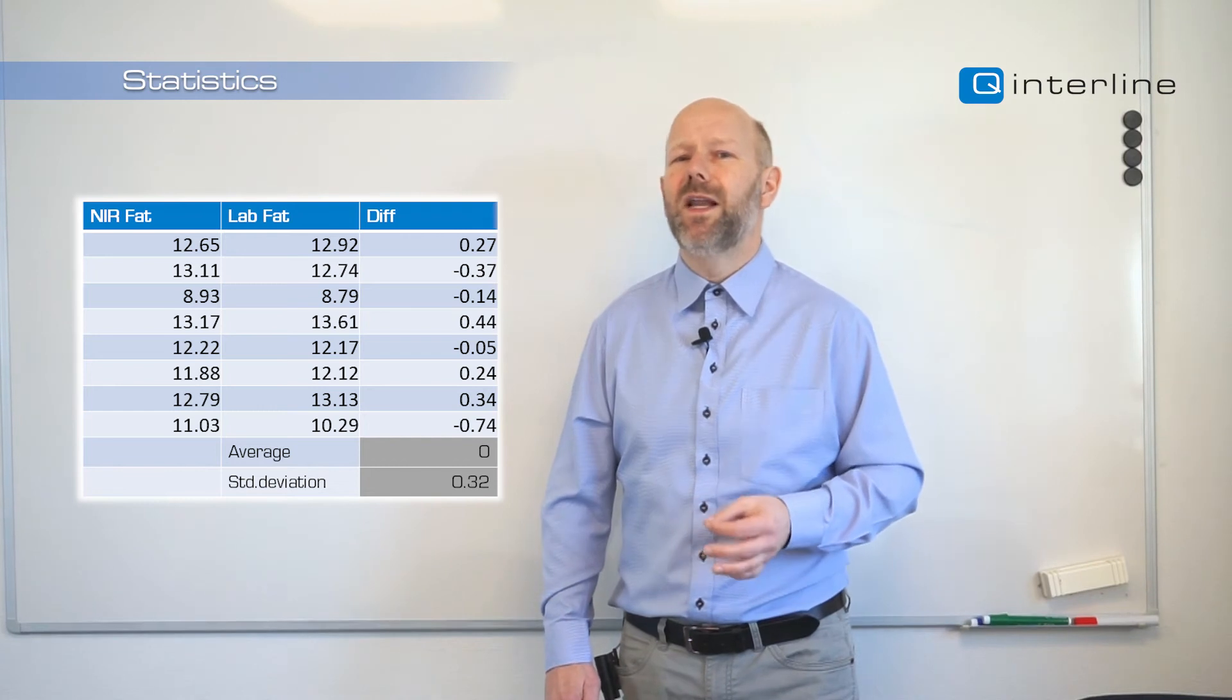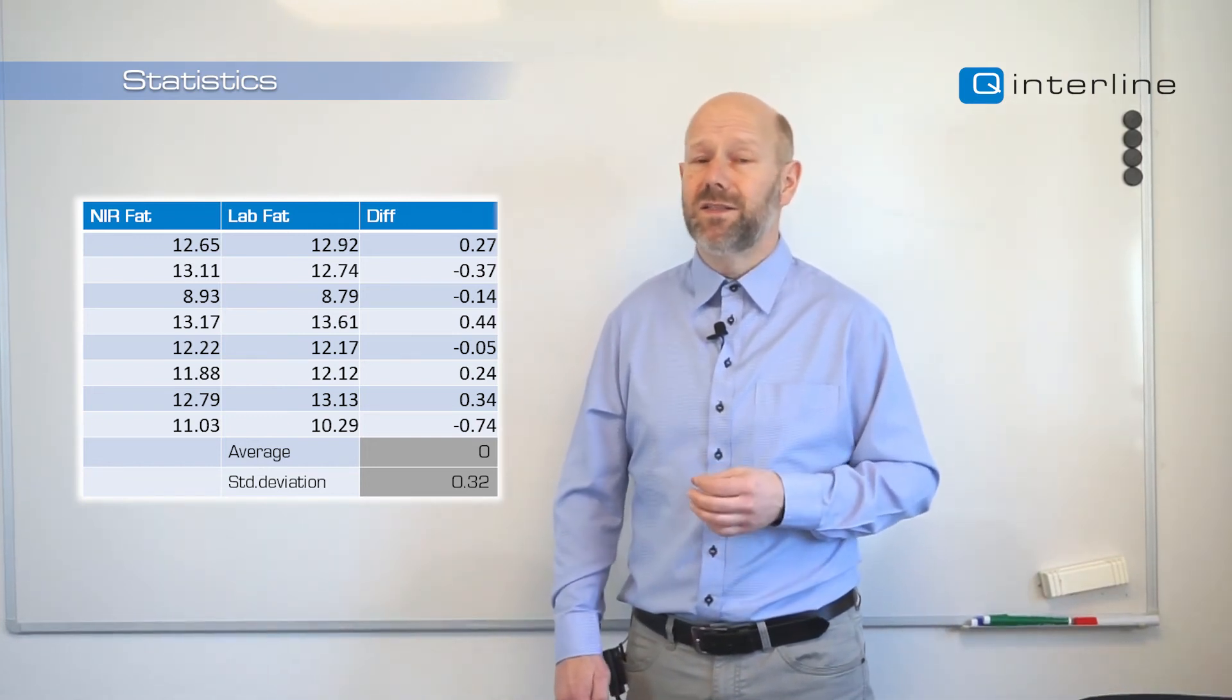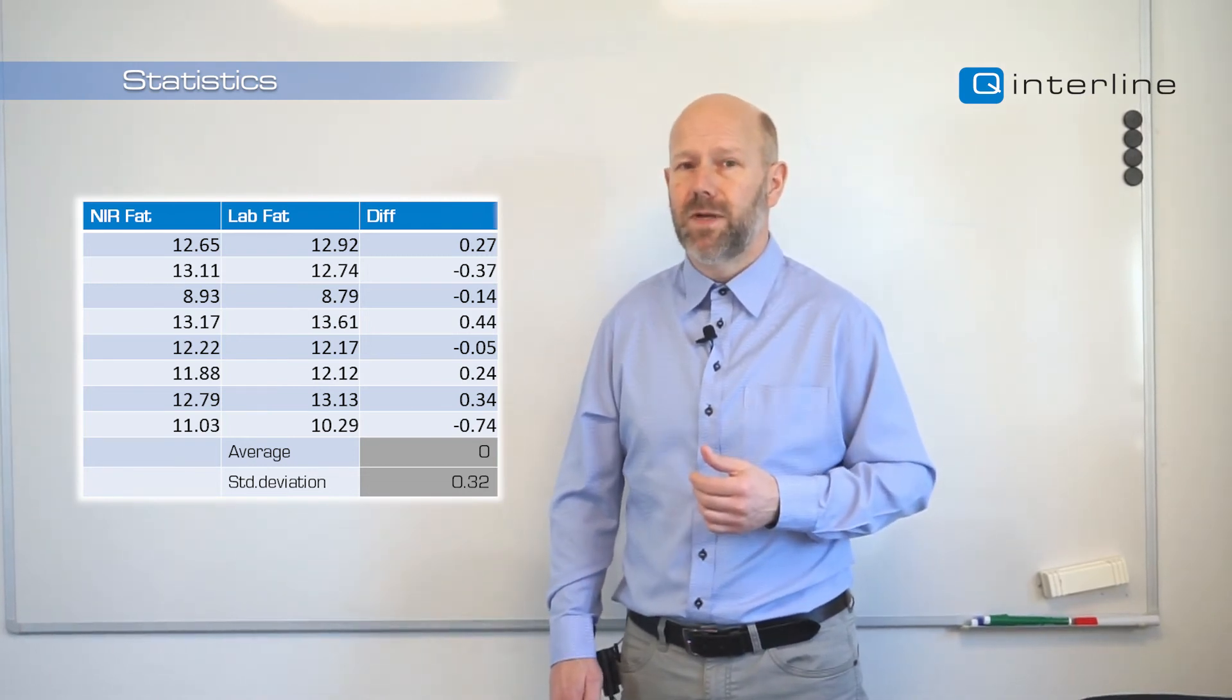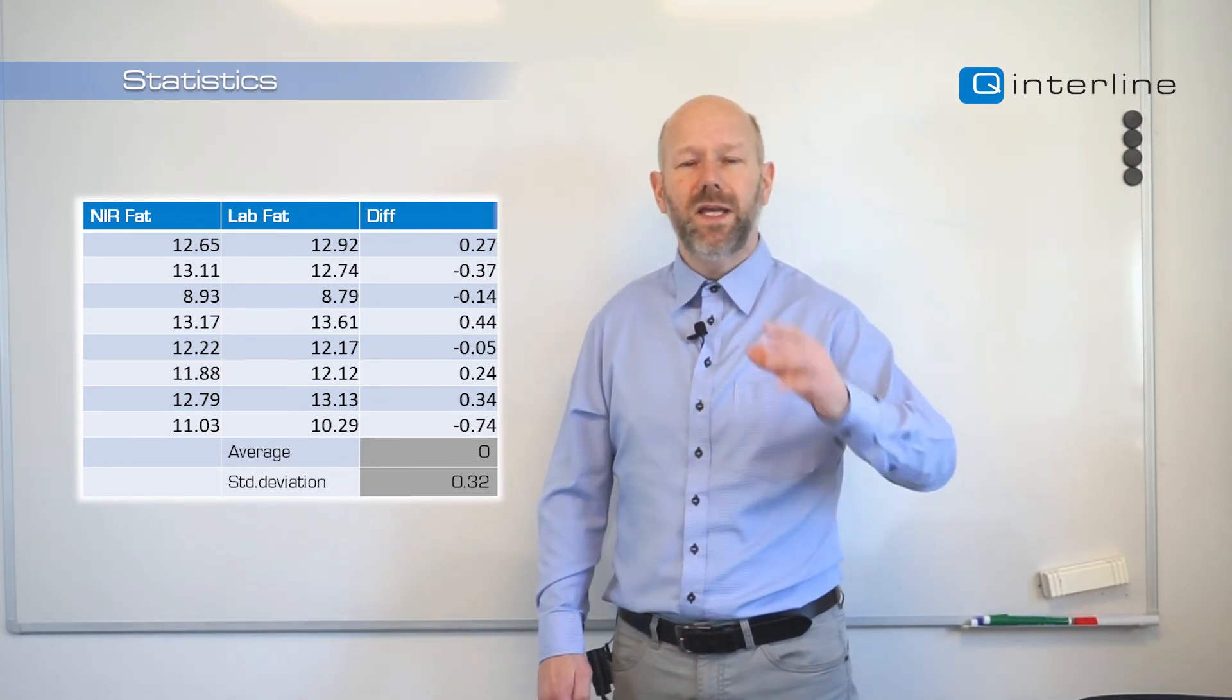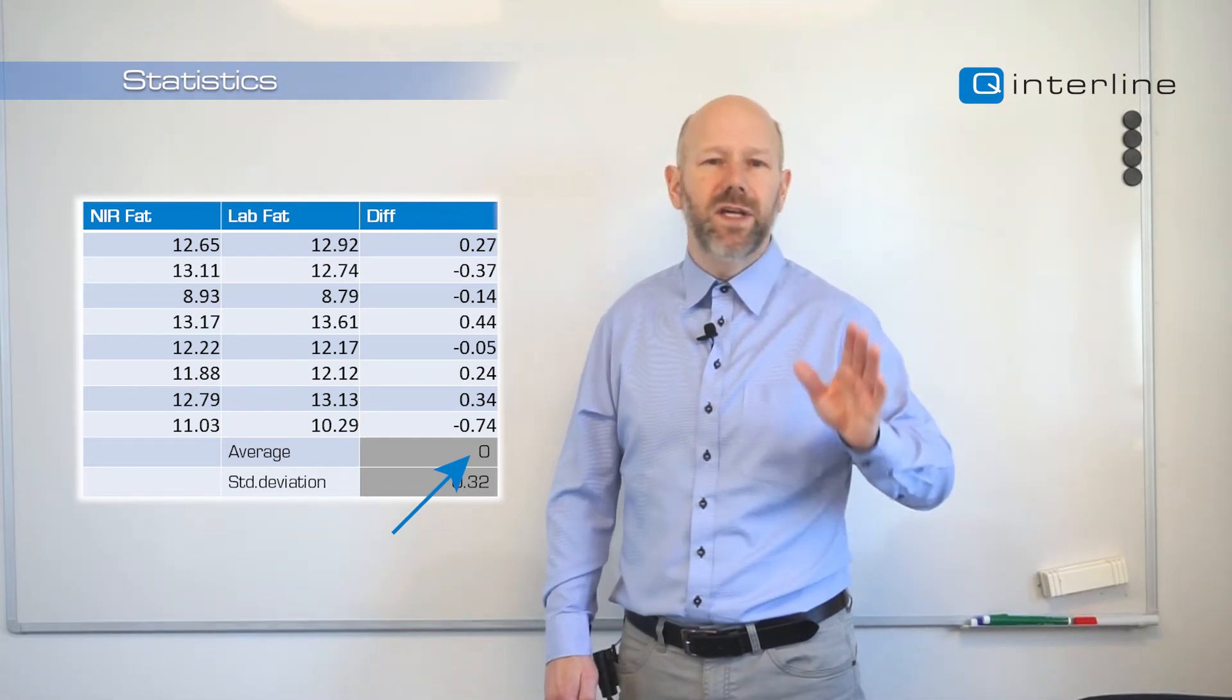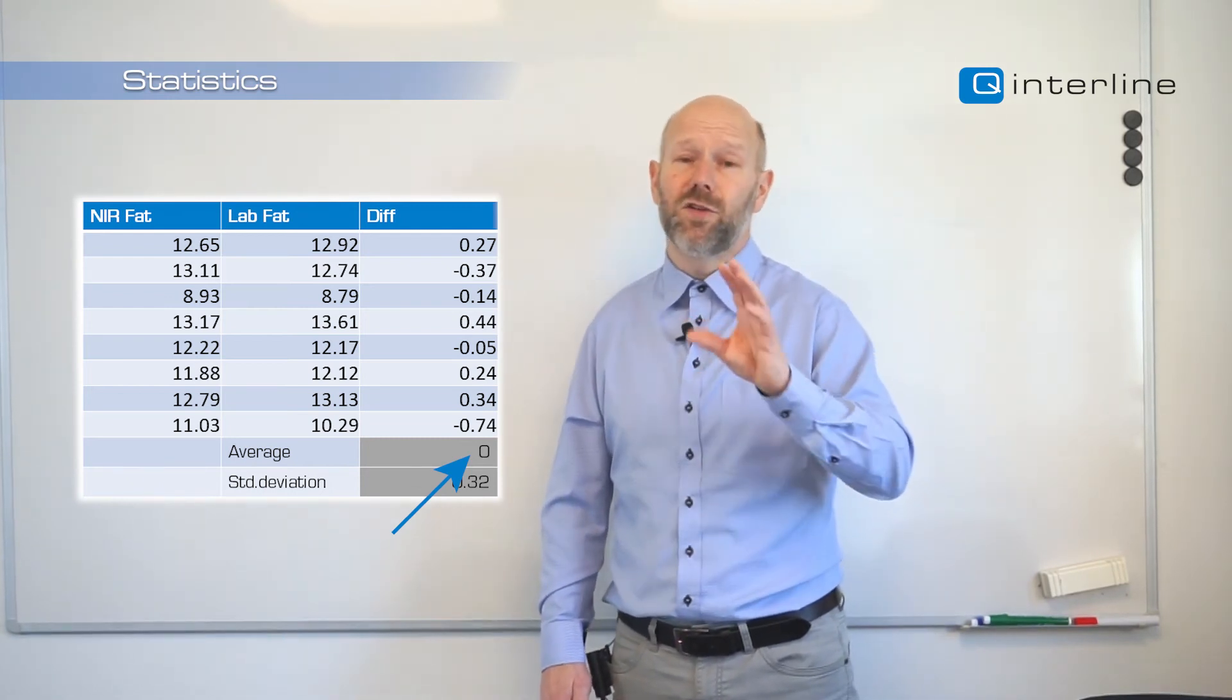We can see when we validate that the NIR gave certain fat numbers, the lab gave other fat numbers, and we see that they are not identical. Some of the differences are very small, some of them are higher. But that's statistics. We can observe with Excel or other means, we can calculate the average error. In this case, it's zero. It's of course constructed. We'll never hit zero in real life, especially if the data set is as small as this one. Be careful with false biases on small data sets.